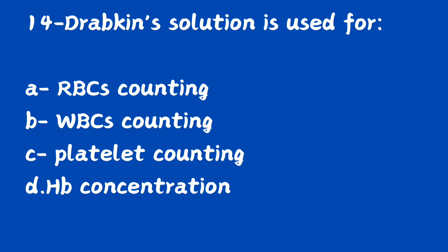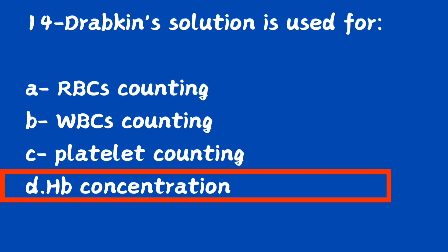Question number 14. Drabkin solution is used for: option A, RBC counting; option B, WBC counting; option C, platelet counting; option D, hemoglobin concentration. The right answer is option D, hemoglobin concentration. Drabkin solution is used for hemoglobin estimation in the cyanmethemoglobin method.